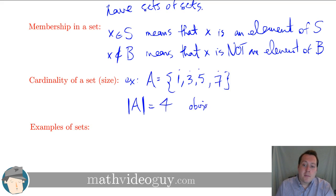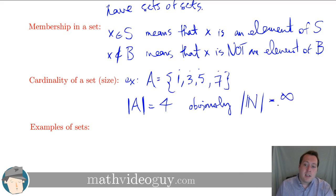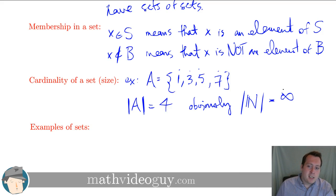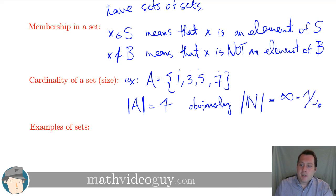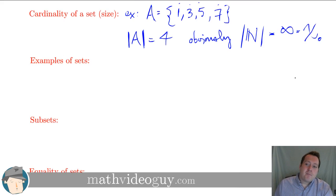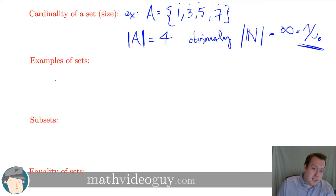Obviously things like the cardinality of the natural numbers are infinite. If you go on to study set theory further, you'll find that this infinity doesn't fully describe how many things are in that set — there are actually things that can be infinite and bigger than that. One symbol used to denote the cardinality of the natural numbers is aleph-naught (ℵ₀), but that's a more advanced topic.